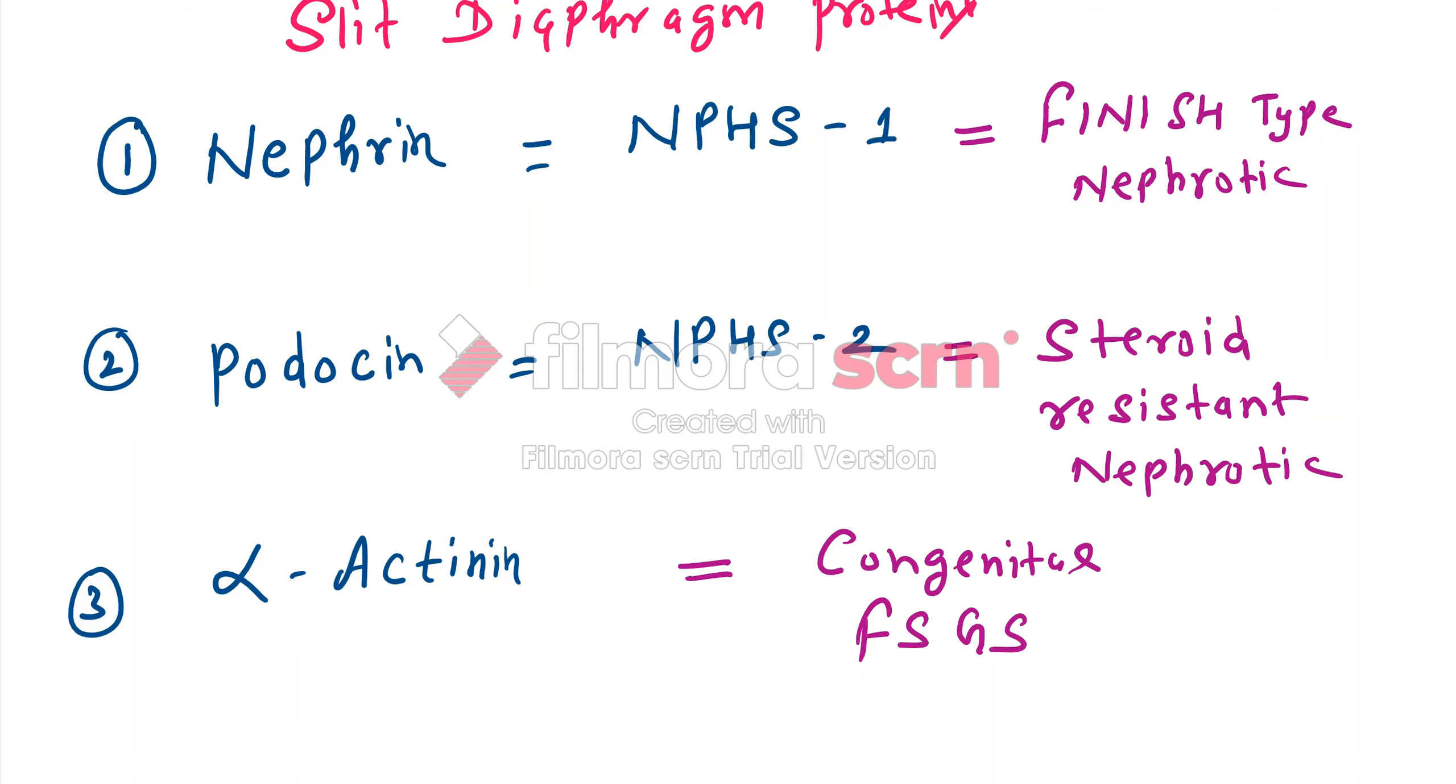These are three congenital types of glomerulonephritis. The simple way to remember them is, just listen to me very carefully.